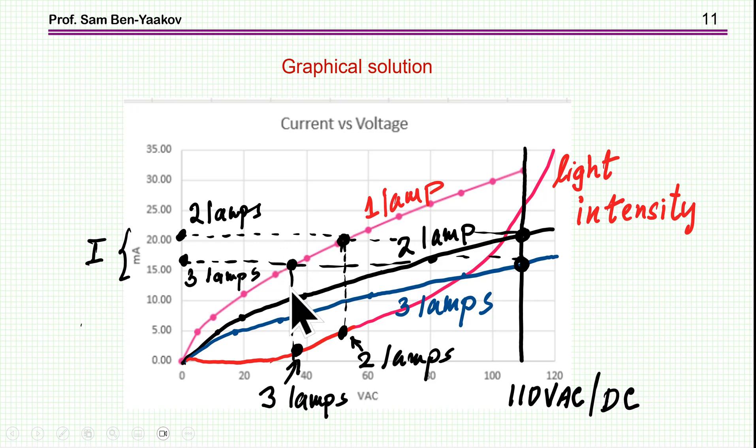And now, since I know the current, I can then judge from the characteristic of the single lamp, what would be the voltage on each of the lamps. Obviously, it will be the same. And also, I can find out what is the light intensity for the two cases.